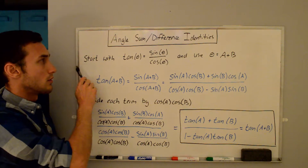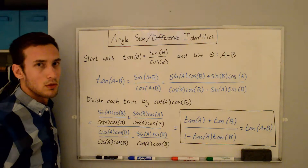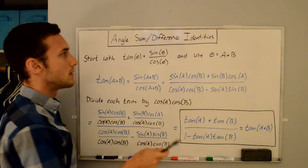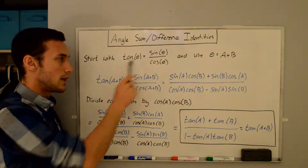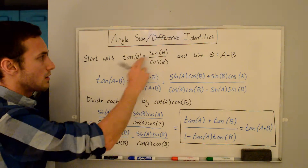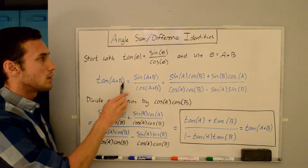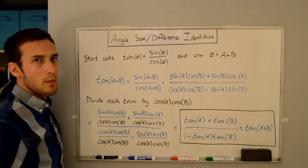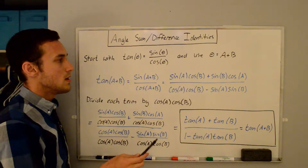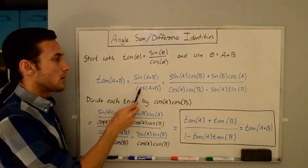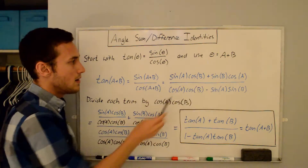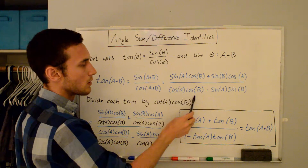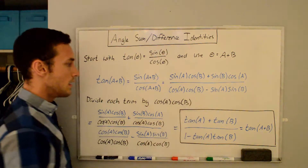We're going to start with the fact that tangent of theta is equal to sine theta over cosine theta, and we're going to use theta equals a plus b because we're looking for tangent of a plus b. So if I plug that in, we get tangent of a plus b is equal to sine of a plus b over cosine of a plus b. And if you recall from my angle sum identity video for sine and cosine, we can plug those identities in here and we'll get sine a cosine b plus sine b cosine a over cosine a cosine b minus sine a sine b.